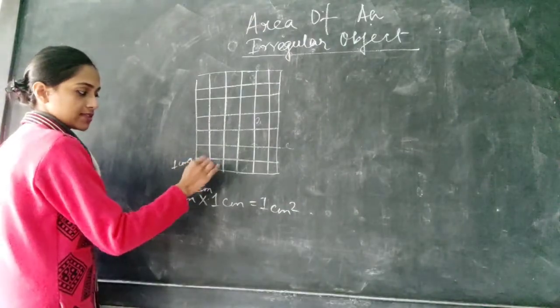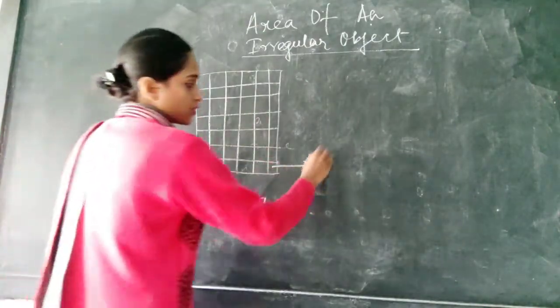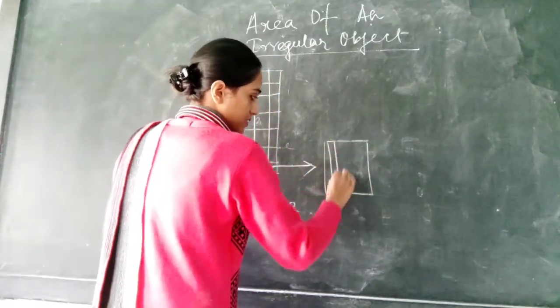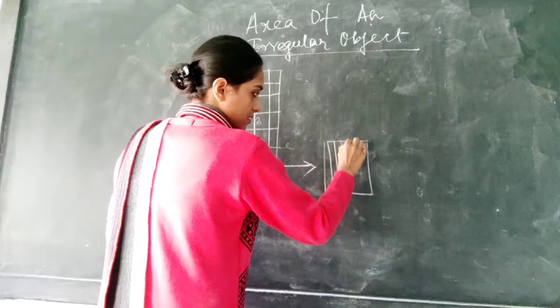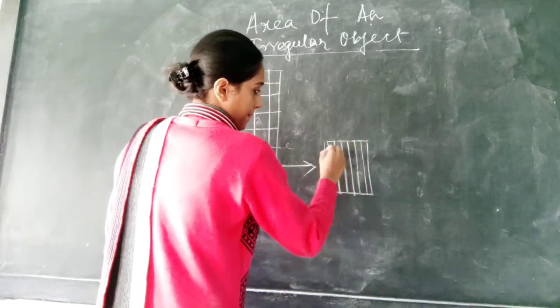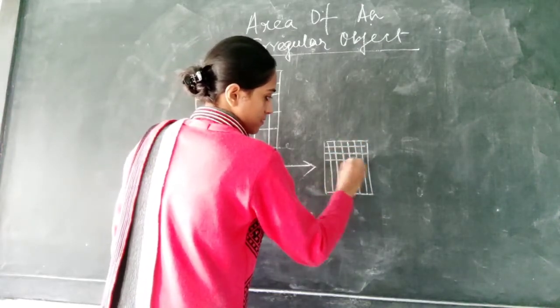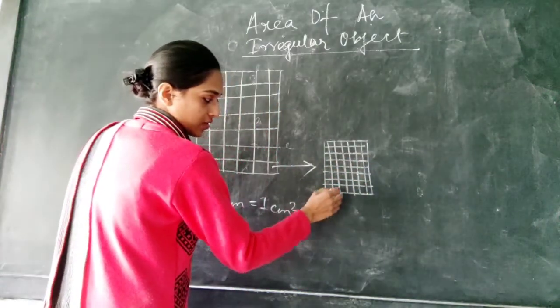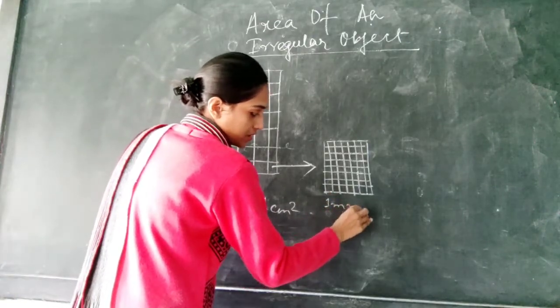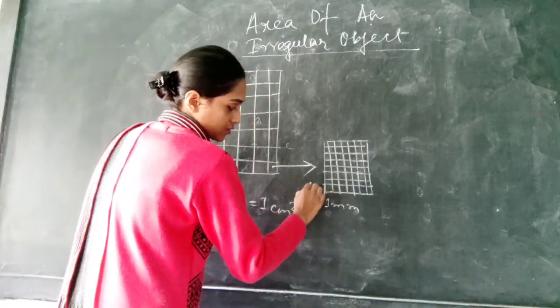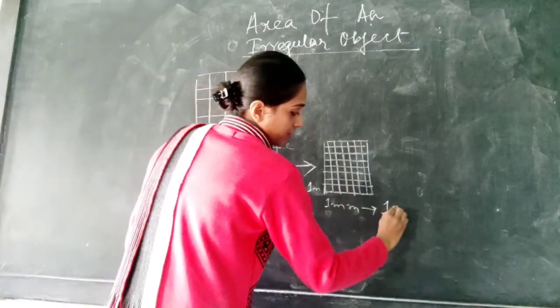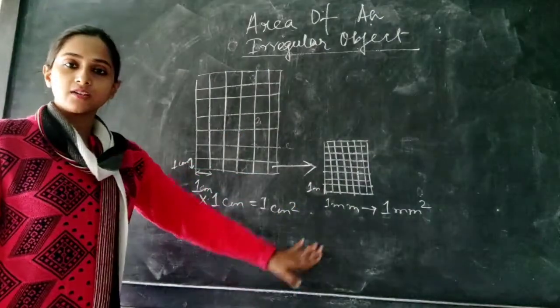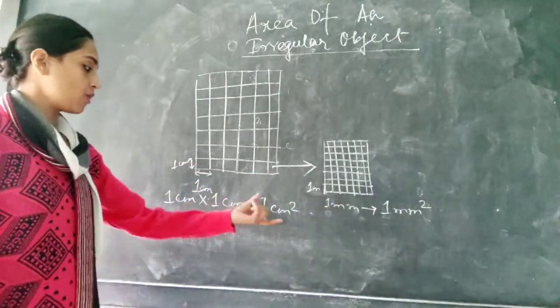Now within this 1 cm, if I will broaden this, so this 1 cm square is having again 10 divisions. Similarly. Now each of these divisions measurement is 1 mm. On this side also. So the area of this small square is 1 mm square. Ten 1 mm square comprise together to form 1 cm square. So this is the graph.